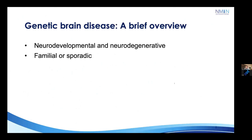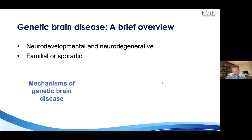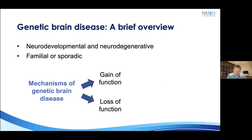Brain diseases represent a very significant unmet medical need. The brain is really hard to get therapeutics into, and the diseases can be quite complex. It also represents a massive cost to the Canadian healthcare system. In our lab we study both neurodevelopmental disorders and neurodegenerative disorders — they can be familial or sporadic, caused by genetic causes or environmental factors, or a combination of both. For today's talk we'll focus mostly on purely genetic disorders that have a clear monogenic cause, and we can break down these genetic brain diseases into two underlying mechanisms.